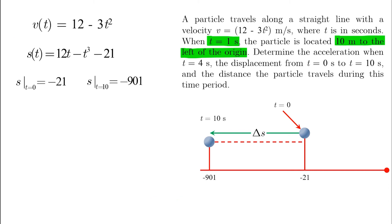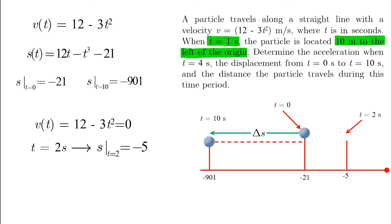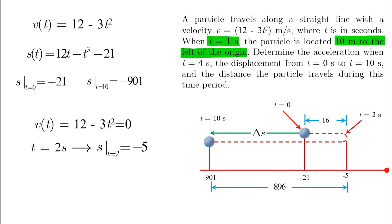Using the same information, we only need to find the position when V equals zero, which was when T equals 2. S at T equals 2 is minus 5, which means from T equals 0 the particle moved to S equals minus 5 after 2 seconds, then turns around and goes all the way to S equals minus 901 after 10 seconds. The first segment from T equals 0 to T equals 2 measures 60 meters, from minus 21 to minus 5. The second segment measures 896 meters, which is the magnitude from minus 901 to minus 5. Make sure you measure the length only, without negative signs.